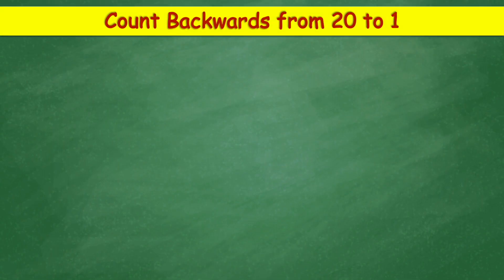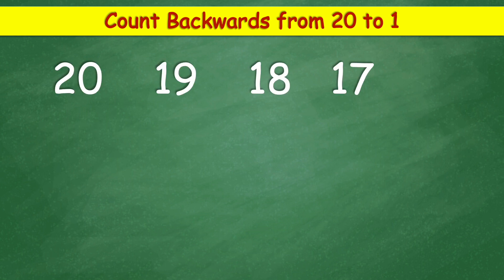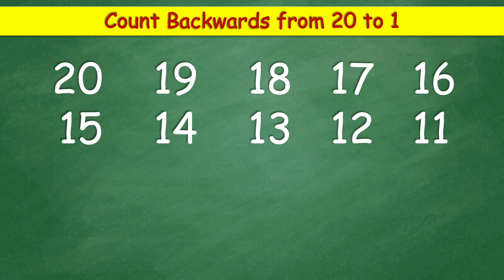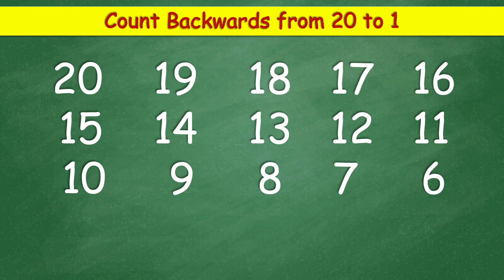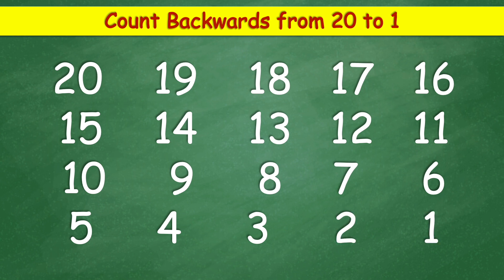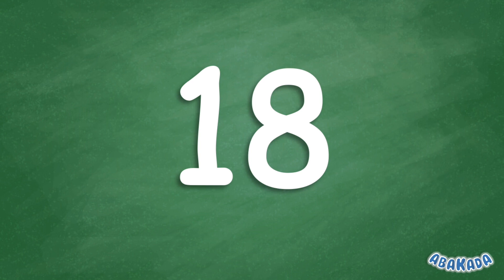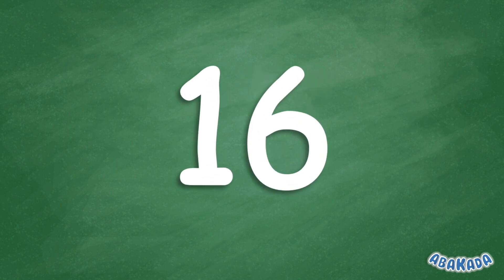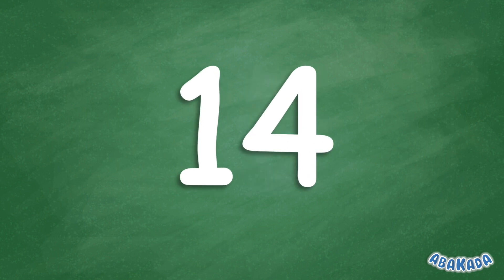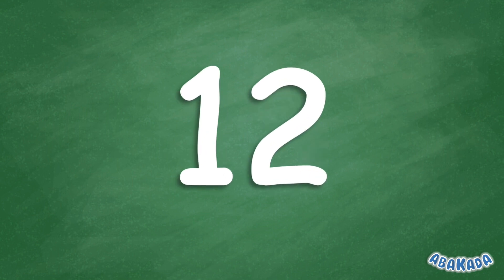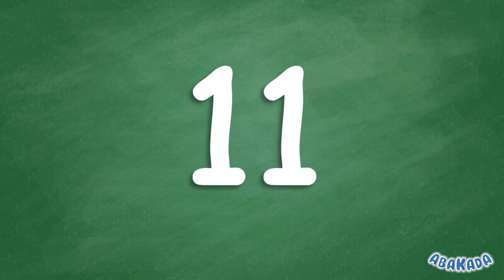Abacada. Count backwards from 21: 20, 19, 18, 17, 16, 15, 14, 13, 12, 11, 10, 9, 8, 7, 6, 5, 4, 3, 2, 1. Let's do it again: 20, 19, 18, 17, 16, 15, 14, 13, 12, 11, 10.